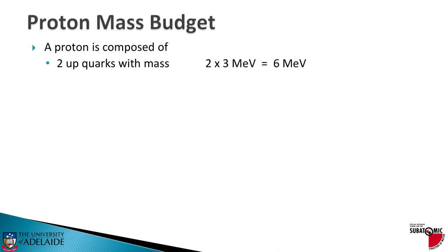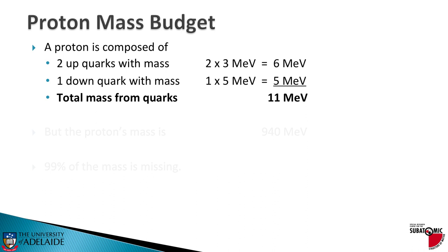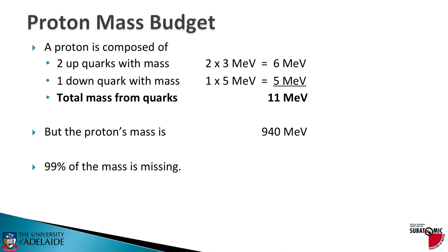Let's take a look at the proton mass and how that comes about. You need two up quarks. Up is a particular flavor of quark. You need two of those, and they have three MeV mass each. So we're looking at six MeV. You need one down quark that has a mass of about five MeV. Added up, you've got 11 MeV, but there's a problem. The proton's mass is 940 MeV. So you've got to be asking, where's that 99% of the mass? It's missing. And where does it come from? What is the origin of the proton's mass?